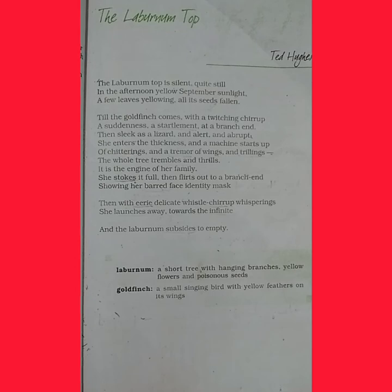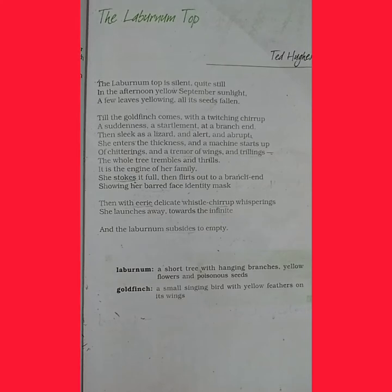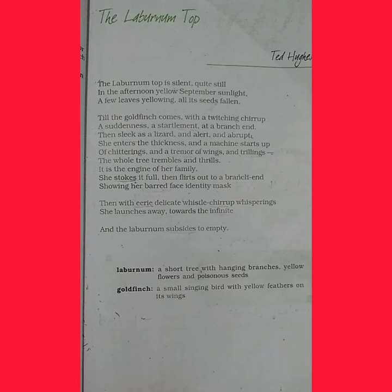The poetic device used in these lines is alliteration. In the second line, 'September' and 'sunlight' — the repetition of the letter S — this is alliteration.